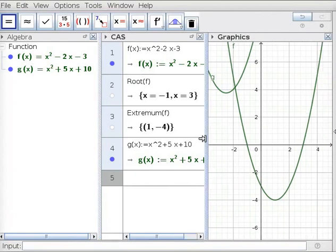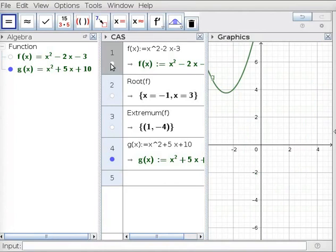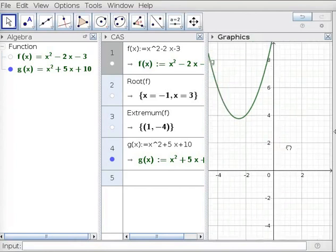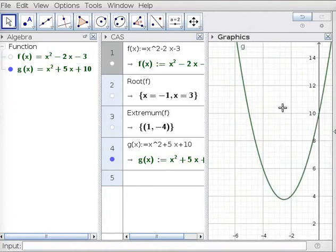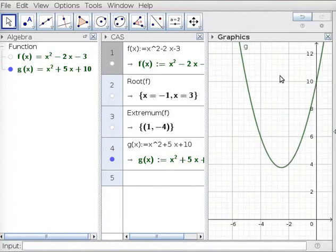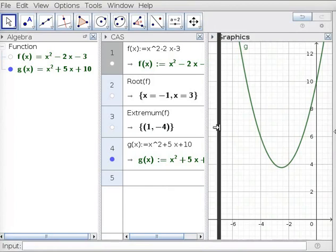Drag boundary to see graphics view properly. Uncheck f of x in CAS view. Note that this also unchecks it in algebra view and hides parabola f in graphics view. Click in and drag graphics view so you can see parabola g. Again drag boundary to see CAS view properly.